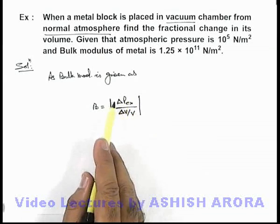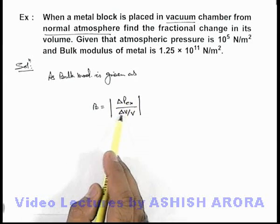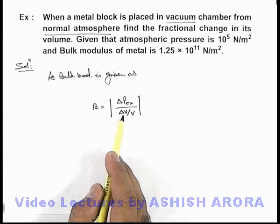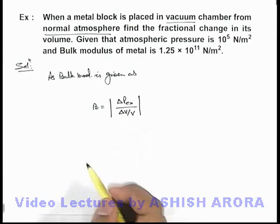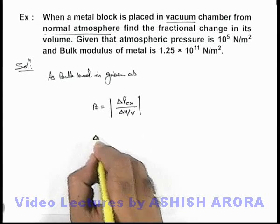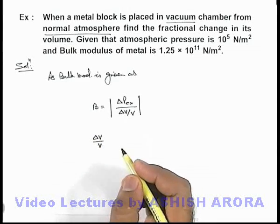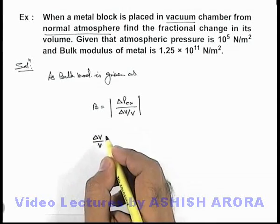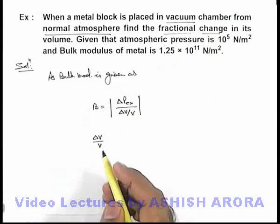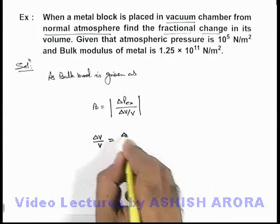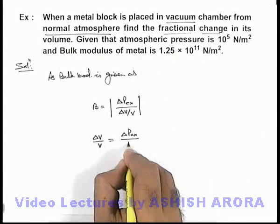If the excess pressure is removed, it will expand by a volume delta V. So we can simply write delta V by V, which is the fractional increase in its volume that we are required to find. This can be written as delta P divided by the bulk modulus.